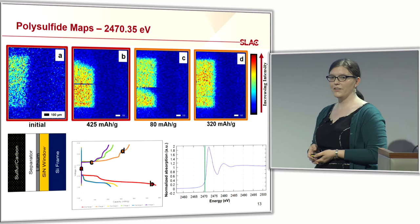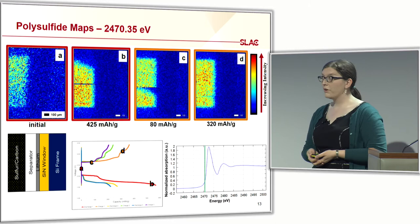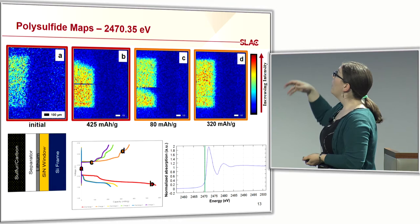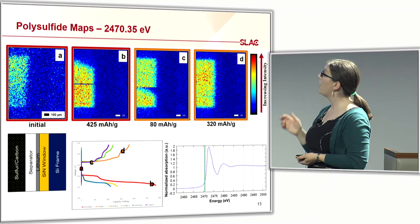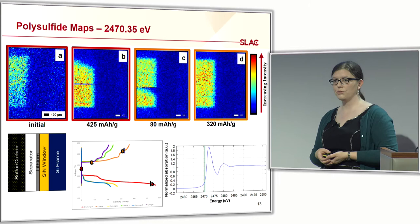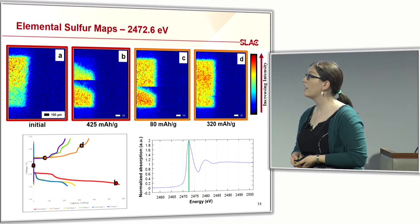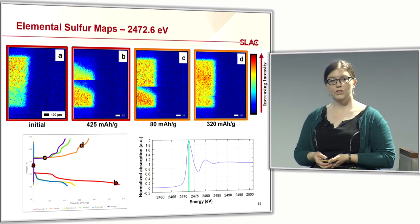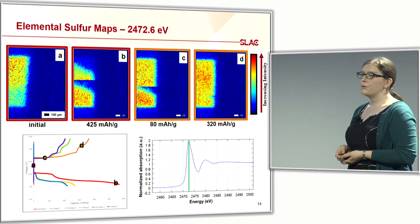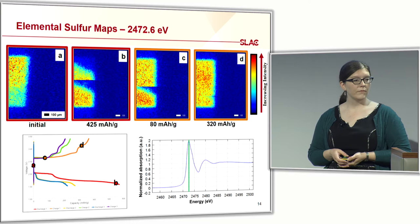At the beginning of the first charge, that discontinuity is still present. The polysulfide intensity is starting to decrease, and at the end of the first charge we have pretty much a complete recovery of the intensity throughout the electrode, but also some residual polysulfide intensity. Moving to the sulfur edge — S8 — you can see a similar evolution with the discontinuity as we discharge and charge, and a full recovery of the signal at the end of the first charge.